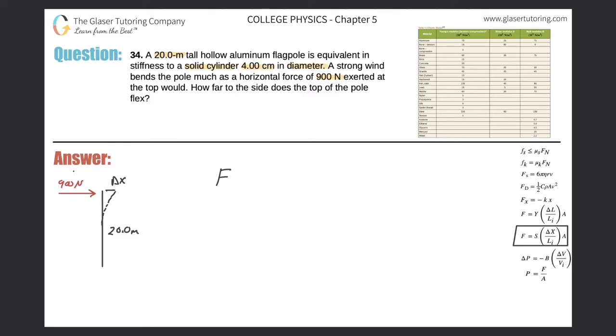So the shear force should be equal to the shear modulus times the change in the x displacement divided by the initial length of the object multiplied by the cross sectional area. So the force that is being applied is 900 newtons.